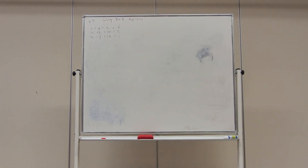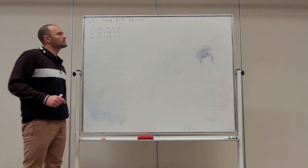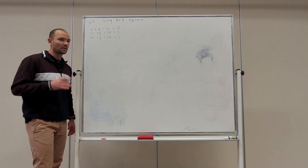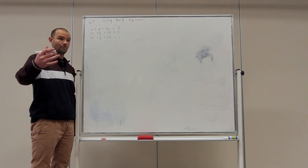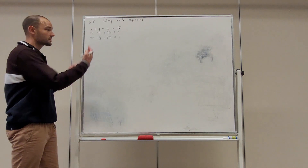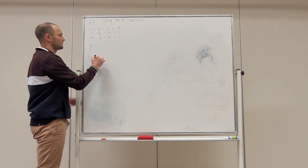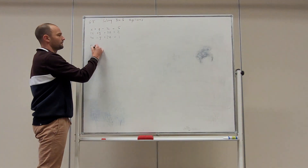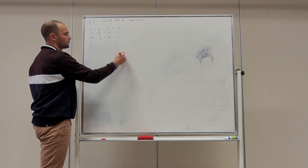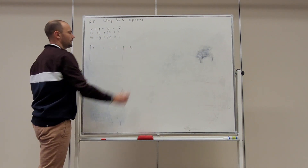The first thing we have to do, like when we have two systems, is we have to describe it in what we call row echelon form, which is where we just abstract from that the numbers. We're not interested in the x and y — we'll put it as a matrix. In the first row we have 1, 1, minus 1, and then 5.